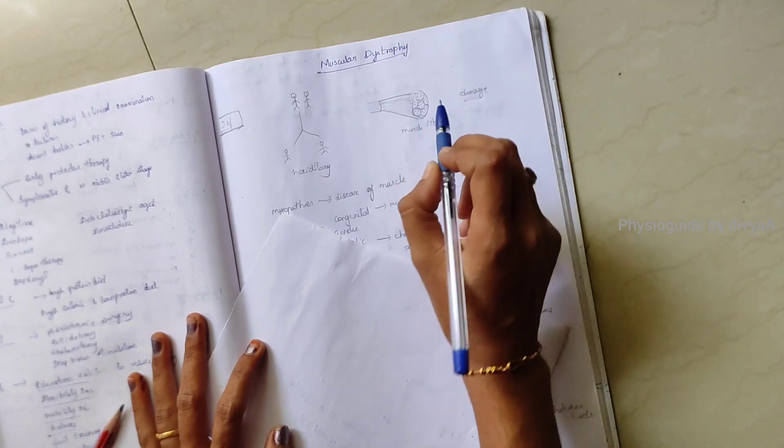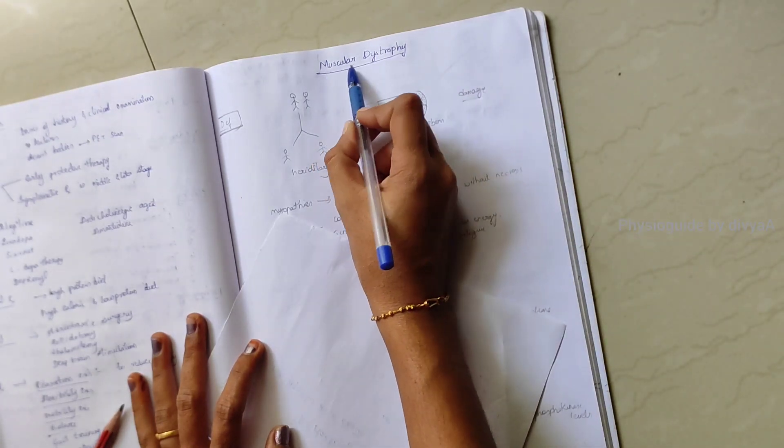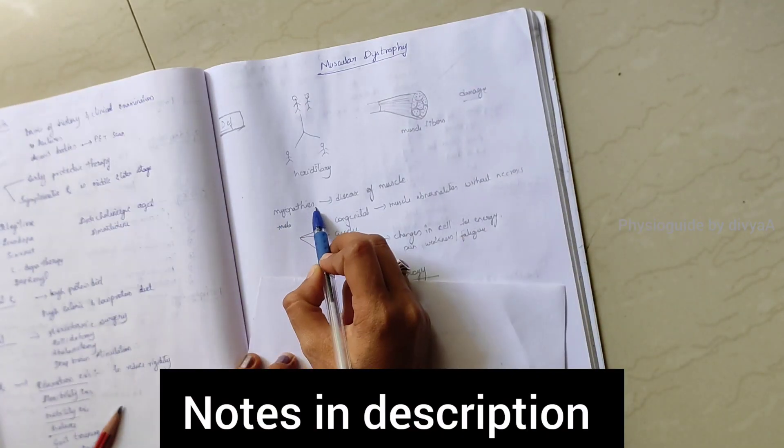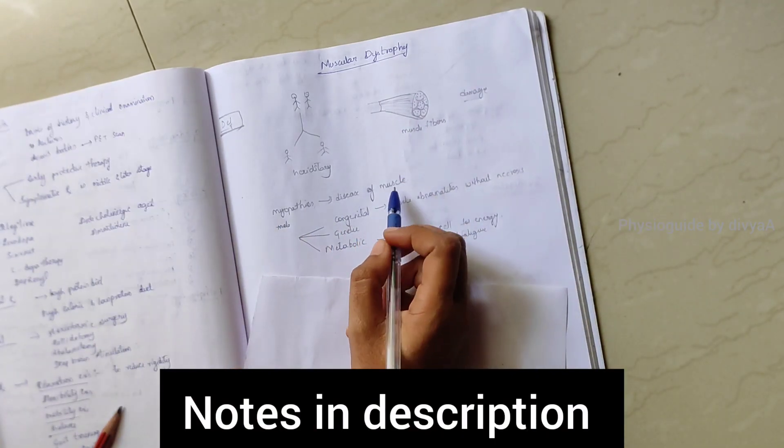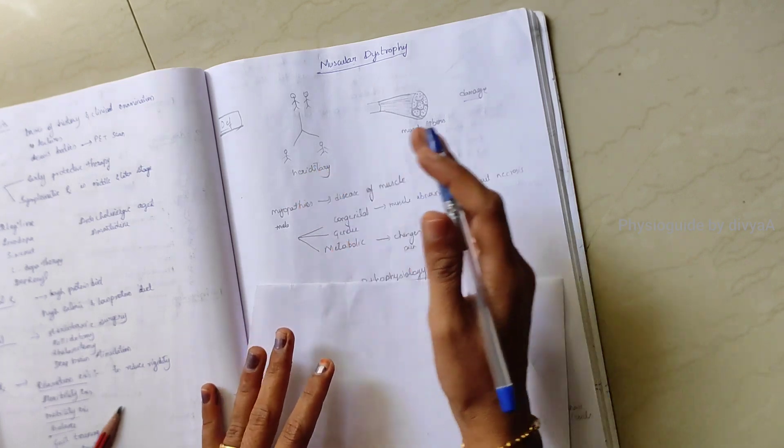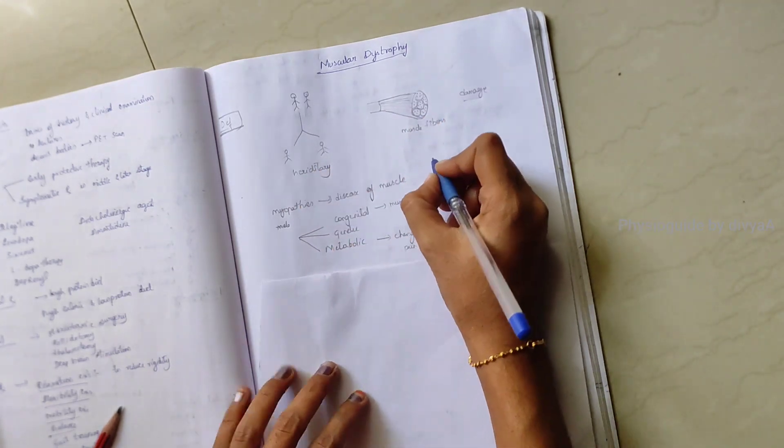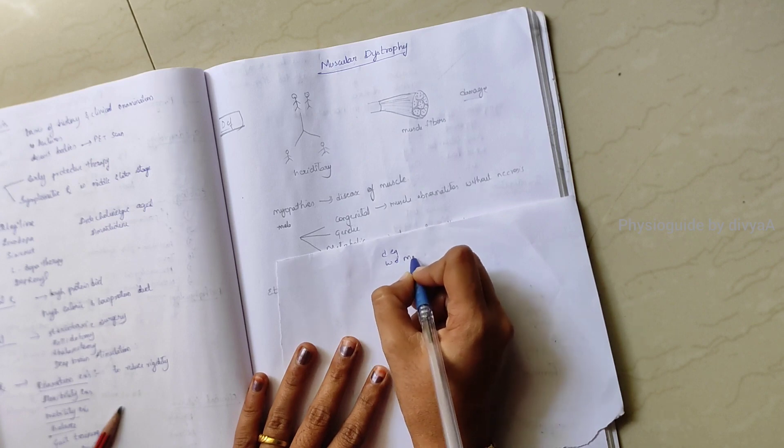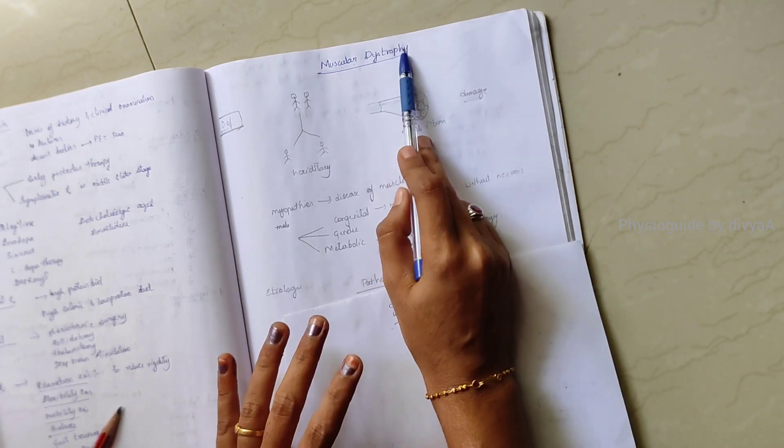Muscle fibers are damaged. From the name we can identify muscular dystrophy - myopathies means disease of the muscle in which progressively there is degeneration and wasting of muscle occurs. Dystrophies is divided into three.